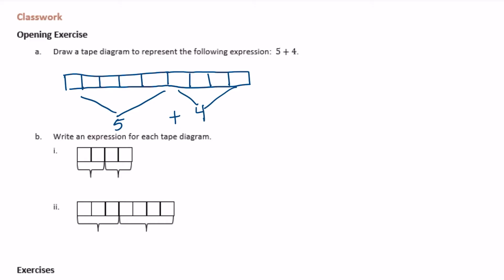Part B: write an expression for each tape diagram. So it looks like we have 1, 2, and then we add on another 2. So 2 plus 2 would be the expression. And since they're asking for expressions, they don't have an equal sign. If they wanted an equation, then we would put equals 4, but it's just an expression.